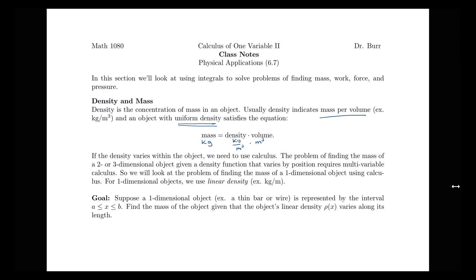On the other hand, if our density varies within the object, we're going to need to make use of some calculus. The problem of finding the mass of a two or three dimensional object where our position would be given by, for example, something that's two dimensional in terms of coordinates x and y or three dimensional in terms of coordinates x, y, and z, we'd have to use some multi-variable calculus because we'd have a density function that would be of x and y or of x, y, and z.